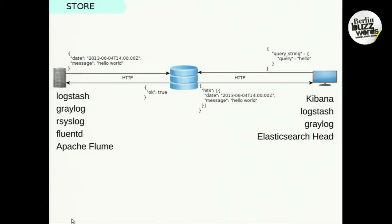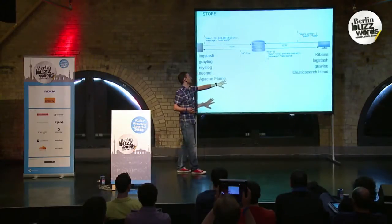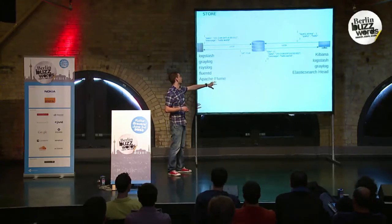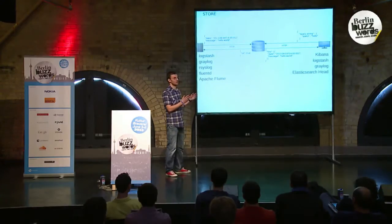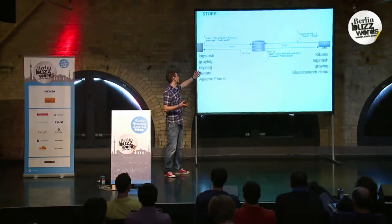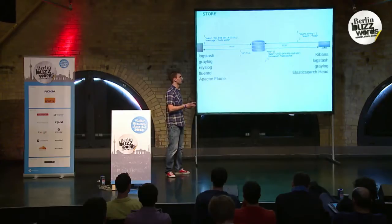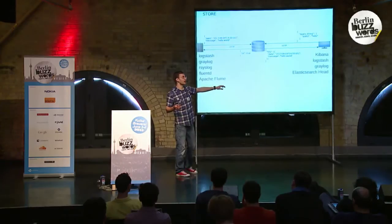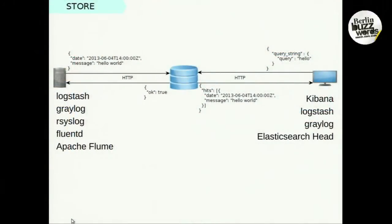These are the tools you can use to ship your logs to Elasticsearch, and the ones over there are the ones you can use to search and do analytics. The way most of them work is by using Elasticsearch's REST API. So you send a JSON over HTTP with your log or logs, and you get back a JSON reply saying it's indexed your logs. On the searching and analytics side it's more of the same — you send a JSON with your query and you get back a JSON with the results.